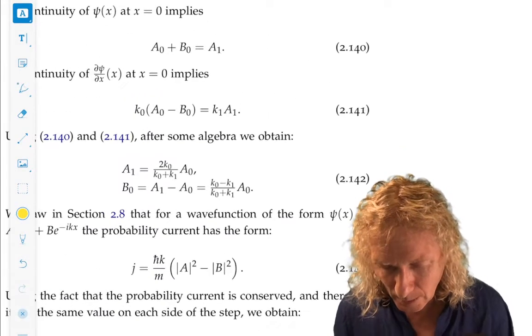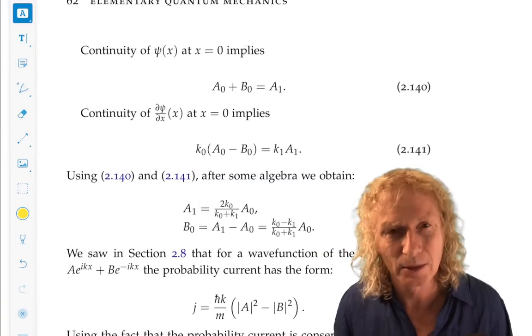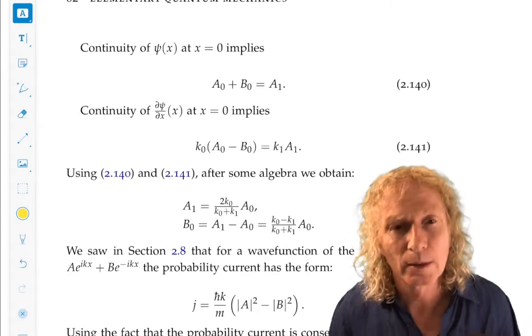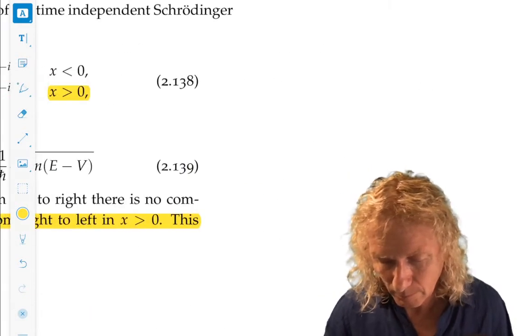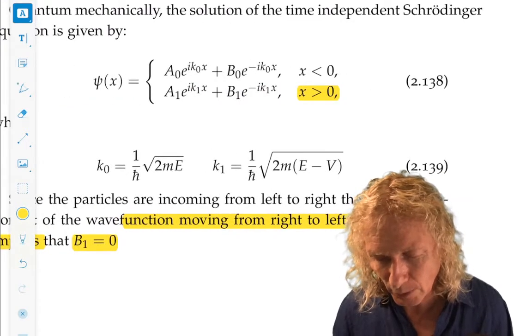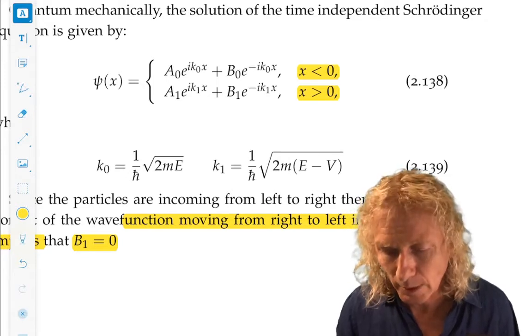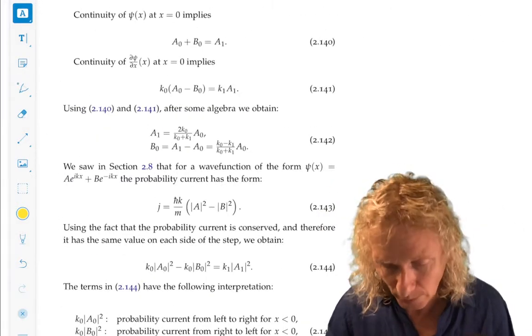And now we have some algebra to do, and I'll tell you how to do it, but it's best that you work through this yourself. So, we demand that the two pieces of the wave function, the wave function for x less than zero, the wave function x greater than zero, be equal at the step, and that their derivatives be equal at the step.